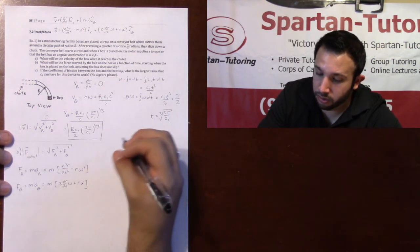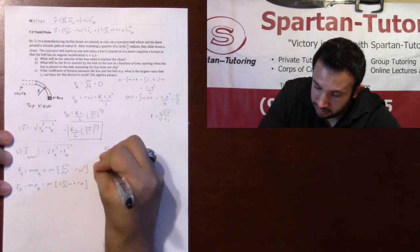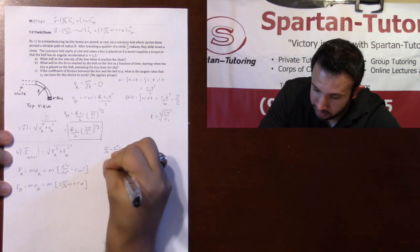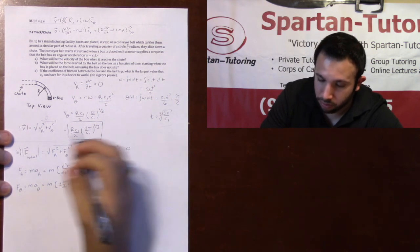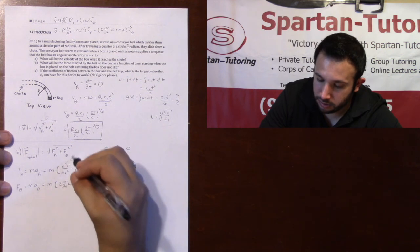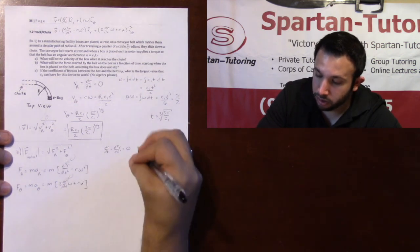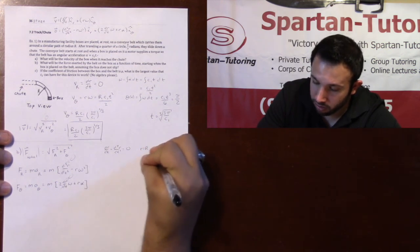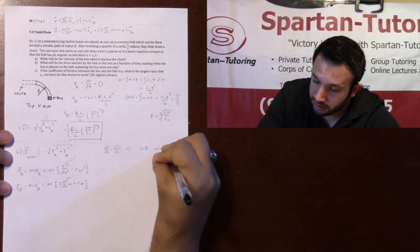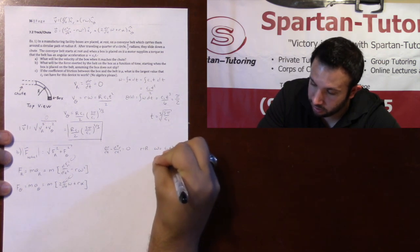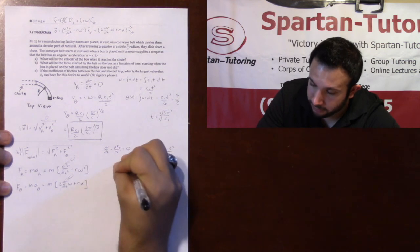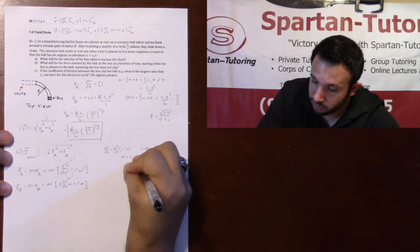We already know that dr dt, therefore the second derivative of r with respect to t is 0. Your radius isn't changing. We already know that r equals capital R. We already know omega is c1t squared over 2. We know alpha is c1t.